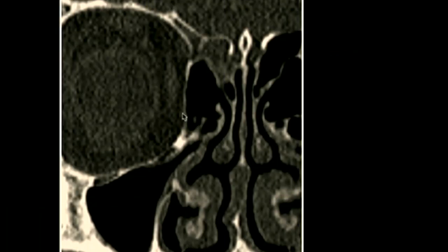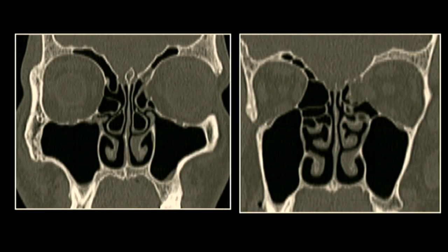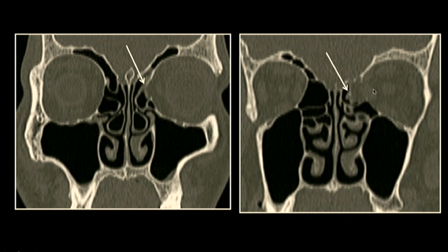The lamina papyracea, the medial wall of the orbit, should run in the plane of the maxillary ostium. If it is more medial, it will be more prone to injury when the surgeon introduces the endoscope to remove ethmoidal inflammation. The lamina papyracea may also have defects, normally seen in about 10% of the population — smaller defects are very common. However, defects become more significant posteriorly, where there is less fat between the medial rectus and the medial orbital wall, increasing the risk of orbital injury. So it is not only the size but also the position of the defect that matters.